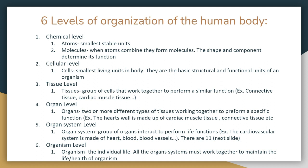When you have a group of cells working together to perform a similar function, that's the third level — tissue. Examples include connective tissue and cardiac muscle tissue. If you have two or more different types of tissues working together to perform a specific function, that's an organ. For example, the heart wall is made up of cardiac muscle tissue, connective tissue, etc.